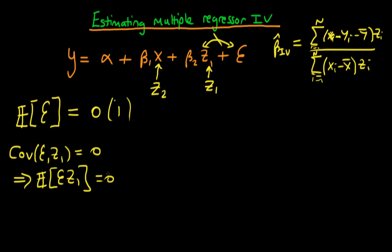So that's the second assumption. So the first assumption is this, the second assumption is this. And then the final assumption is that z2 is uncorrelated with epsilon. So the final assumption is that the covariance of epsilon with z2 has to be equal to zero, which written another way is just the expectation of epsilon times z2 has to be equal to zero.